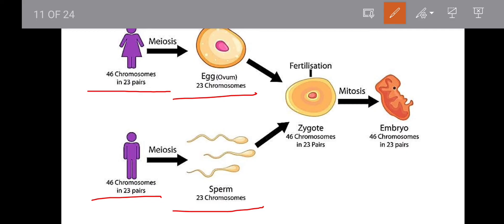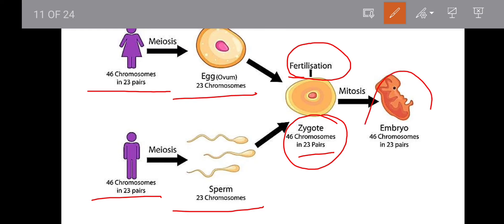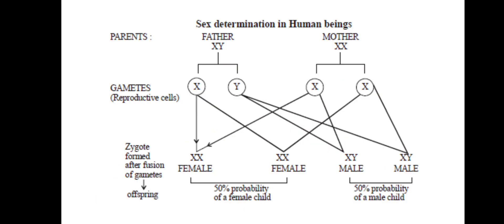The process of fusion of the female ovum and male sperm is called fertilization. This fused cell is called a zygote, which contains 46 chromosomes, that is 23 pairs. The zygote then develops into an embryo and later into a human being.